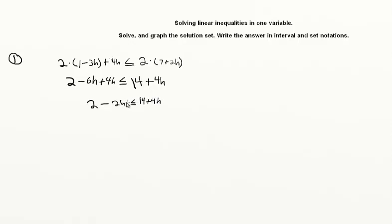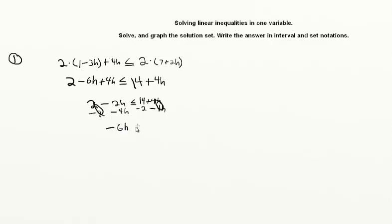Now we can put all the variables on one side and all the numbers on the other side. We subtract four h from each side and subtract two from each side. We have to do the same thing to both sides, and altogether that gives us minus six h is less than or equal to fourteen minus two, which is twelve.